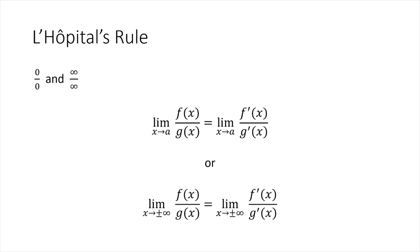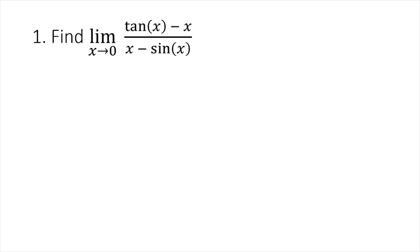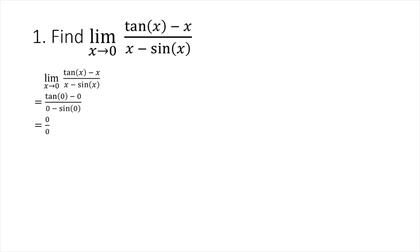Let's have some examples. Number one: find the limit of tangent of x minus x, all over x minus sine x, as x approaches zero. Using direct substitution, we get tangent of zero minus zero divided by zero minus sine of zero. Tangent of zero is zero and sine of zero is zero, so we get zero divided by zero — an indeterminate form. So we can apply L'Hôpital's Rule.